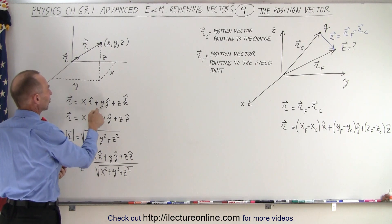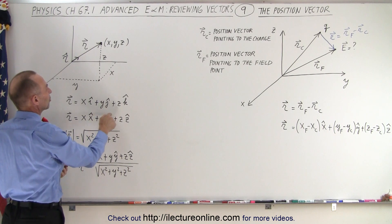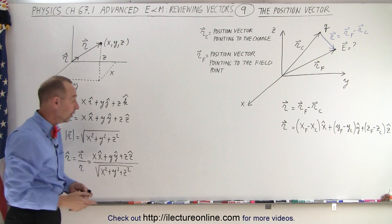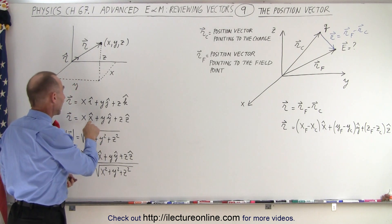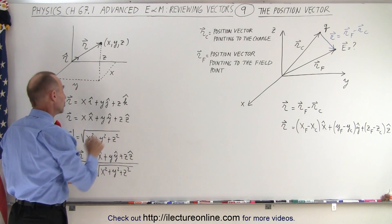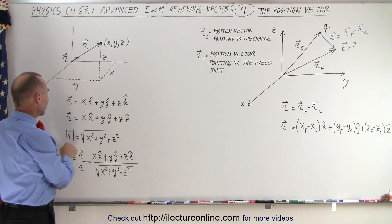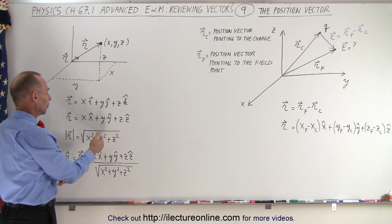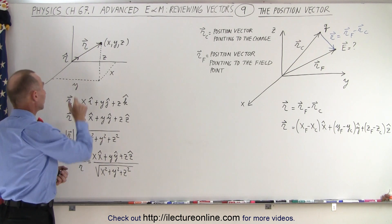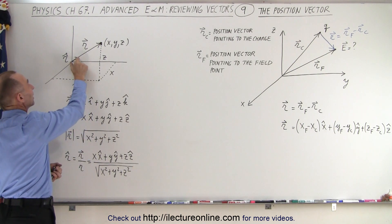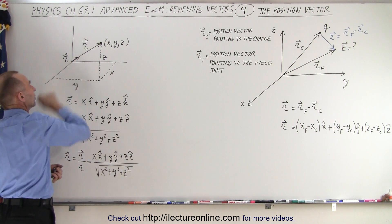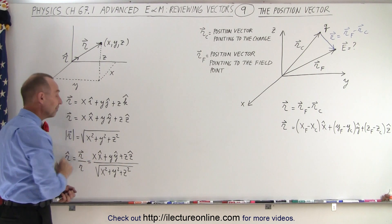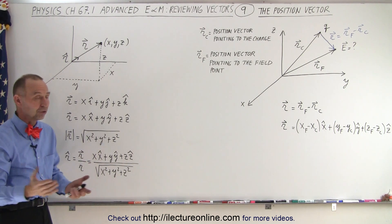It's simply x in the i direction plus y in the j direction plus z in the k direction, or equivalently x, y, z unit vectors. The magnitude of that vector is simply the square root of the sum of the squares of the components, and if we then want to define a unit vector in that direction, we simply take the position vector and divide it by its magnitude.